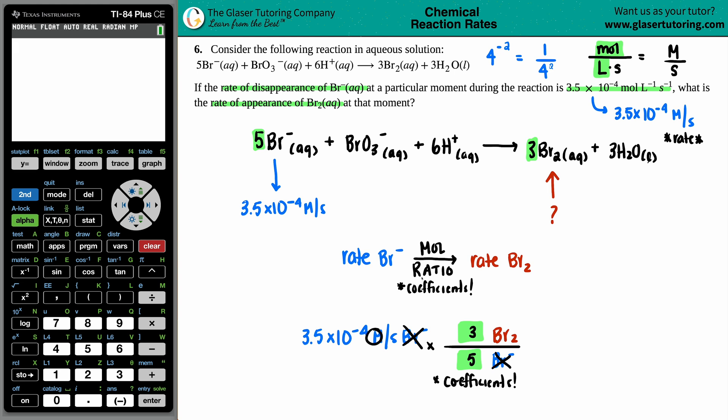Br minus cancels out with Br minus. And the reason why we could use a mole ratio is, remember, molarity, there's a secret mole in there. So secretly, we're going into the unit of molarity, getting rid of the moles of Br minus, and plopping them with the moles of Br2. And then the unit's molarity per second stays exactly the same. So it's just easier when you're doing rates just to cancel out the substances.